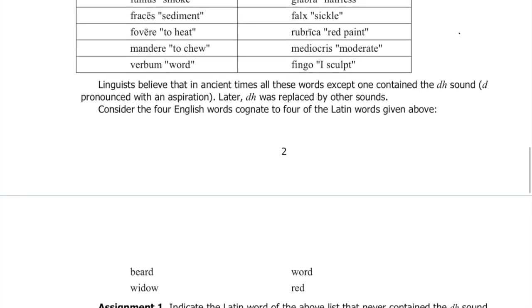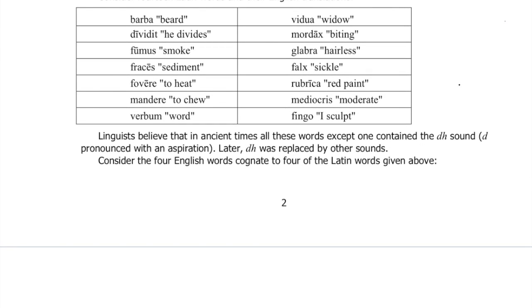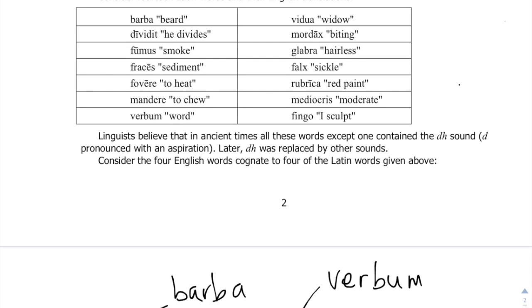We're given four English words — beard, widow, word, and red — and we're told they are cognate to words in the list. Beard comes from 'barba', widow comes from 'vidua', word comes from 'verbum', and red comes from 'rubrica'. A good thing to note is that each of these four English words contains a 'd': beard ends in a d, widow has a d, word ends in a d, and red ends in a d.